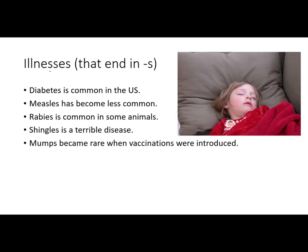Illnesses that end in S are usually singular. For example: 'Diabetes is common in the US,' 'Measles has become less common,' 'Rabies is common in some animals,' 'Shingles is a terrible disease,' and 'Mumps became rare when vaccinations were introduced.' All of these illnesses are singular, so they take the singular form of the verb.